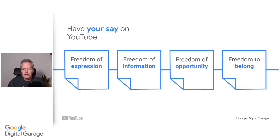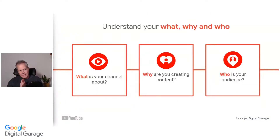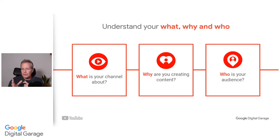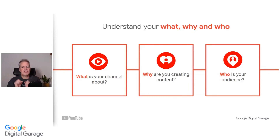The first step to getting started on YouTube is to define a message by finding your niche — your area. We'll look at understanding your what, why, and who. What is your channel about? Why are you creating content — is it for fun, potential work, to document or share experiences, or a new hobby? And who is your audience — who's actually going to watch your content? This will help you decide the tone and style of your videos. Creating a full idea of what you're doing, why, and who you're aiming at helps you focus and create content with purpose.